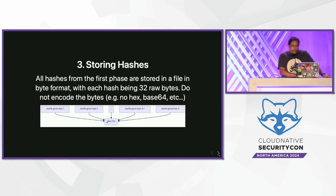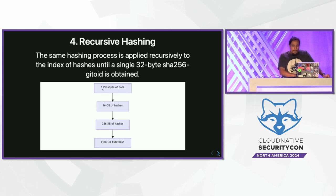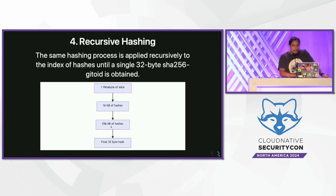All the per-chunk SHA-256 hashes are collected into a single index file in order — 32 bytes per hash, no encoding (no hex, no base64, just straight bytes). The first 32 bytes represent the hash of the first chunk, the second is the hash of the second chunk, and so on. One petabyte of data ends up with 16 gigabytes of hashes. Then we apply this recursively: the 16 gigs of hashes get broken into two-meg chunks and run through the same algorithm, producing 256 kilobytes. That 256 kilobytes is under two megs, so one final pass gives us a 32-byte hash. We just keep doing this until we have the final 32-byte hash, which can be hex- or base64-encoded and placed into your SBOM.